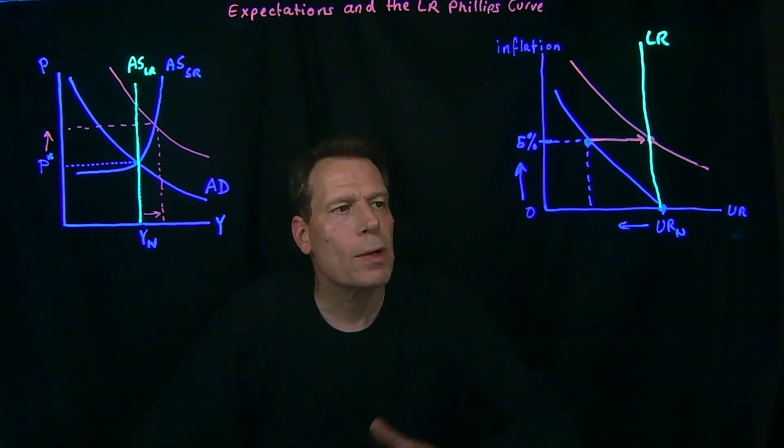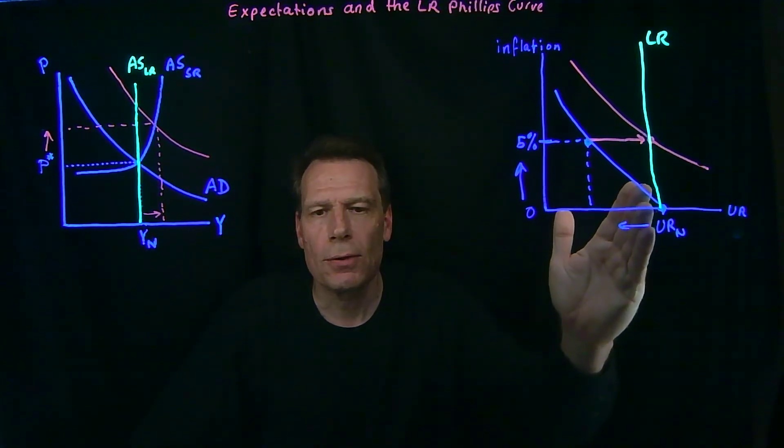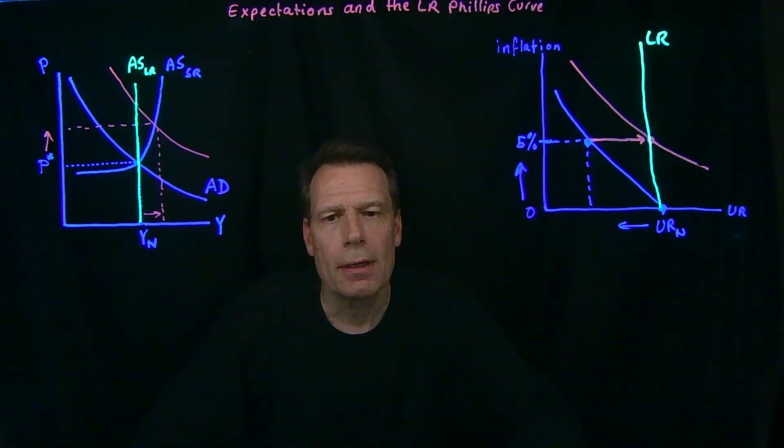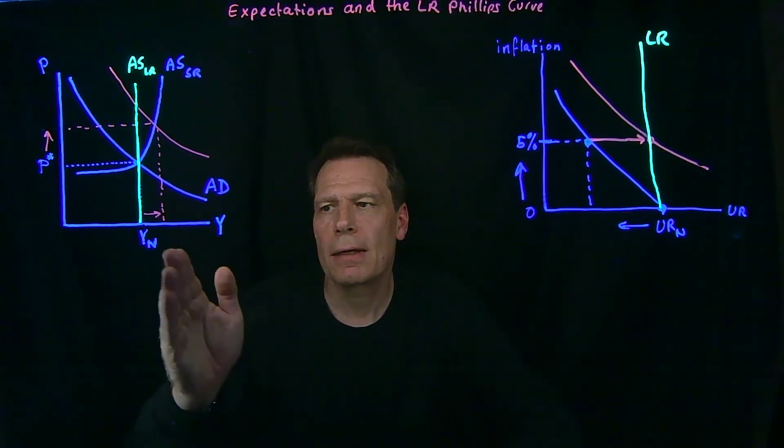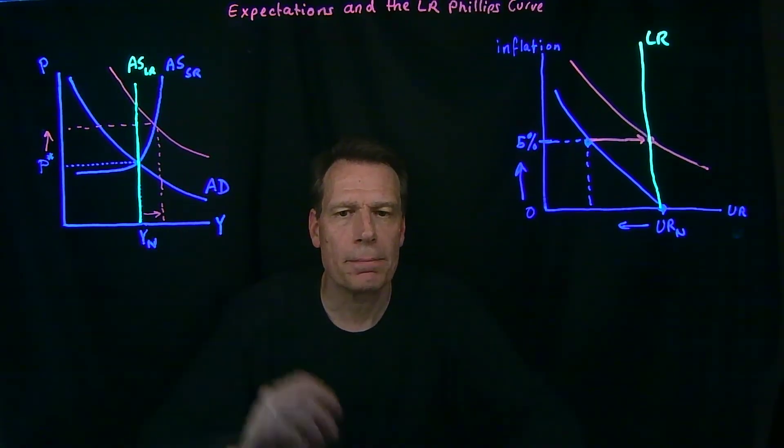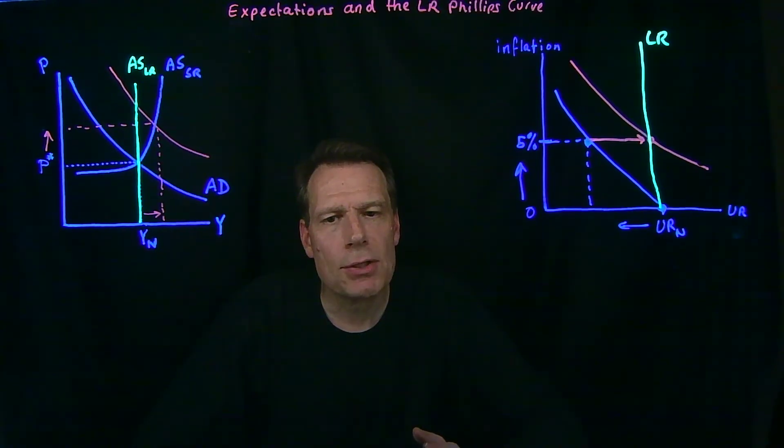In the long run, we always return back to the natural level of unemployment, just as we always return back to the natural level of GDP. But the realization about the role of expectations and changing expectations about inflation in the economy caused a revolution in macroeconomics that changed macroeconomics to this day.